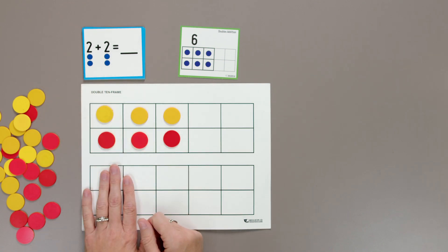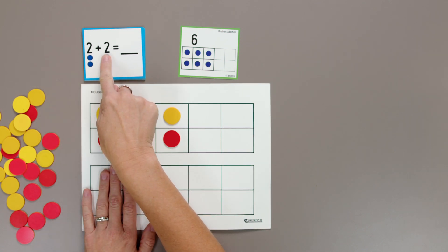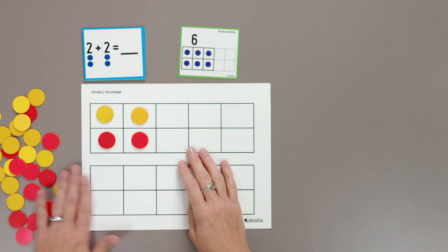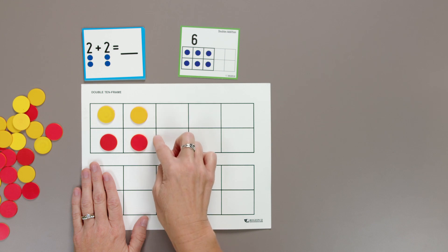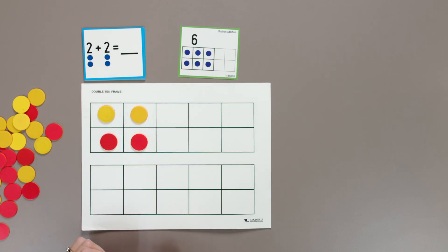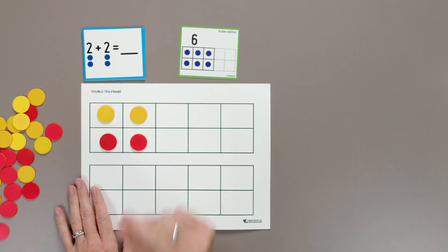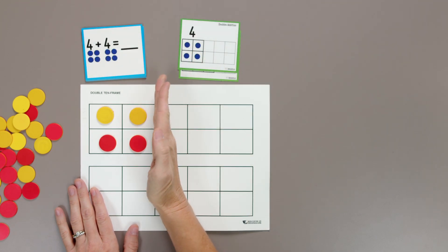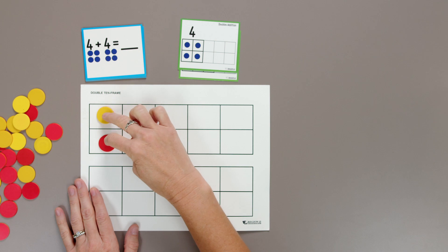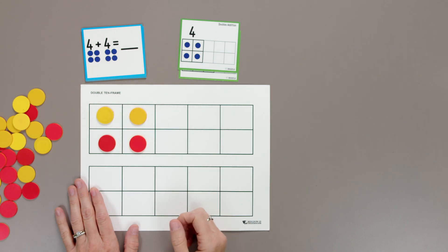Next is two plus two. It's a double. We're adding the same number twice. I'll show two on the top, two on the bottom. Two plus two is four. I bet you already knew that one. Good job. Two plus two equals four. Is four an even number? Both of them have a partner. They do.